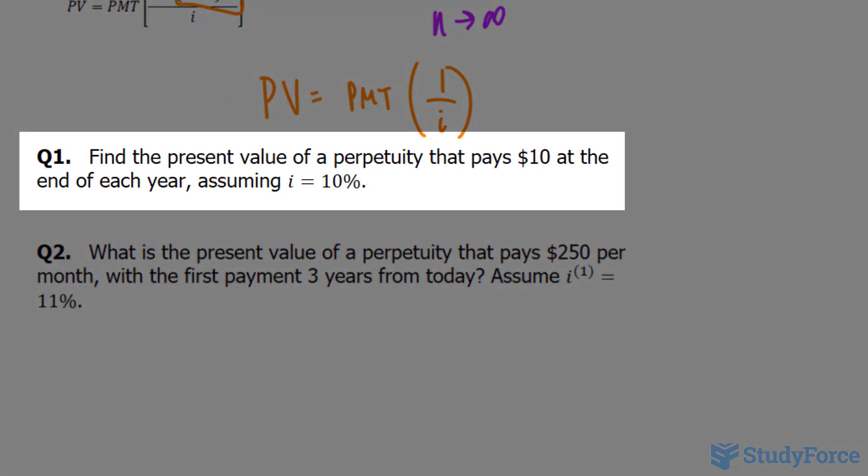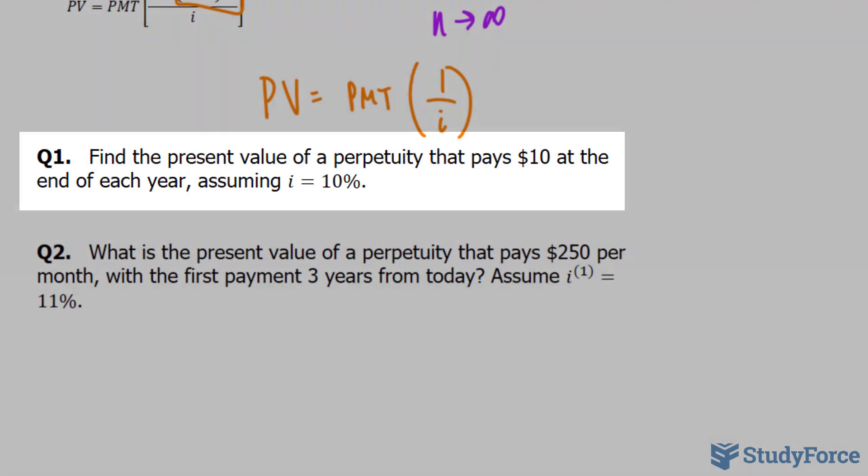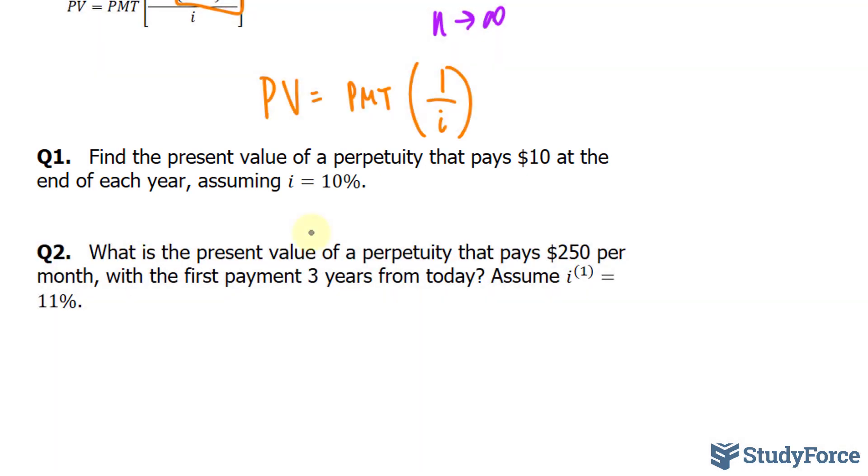The first question asks, find the present value of a perpetuity that pays $10 at the end of each year, assuming that the interest is 10%. Now, as you can tell, this is a straightforward question, because the cash flow of $10 happening at the end of each year corresponds with the interest. This is annual interest of 10%, and the cash flow is happening once every year.